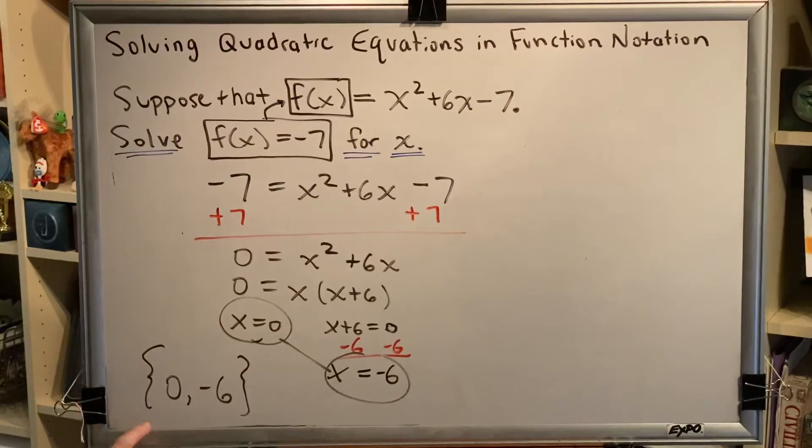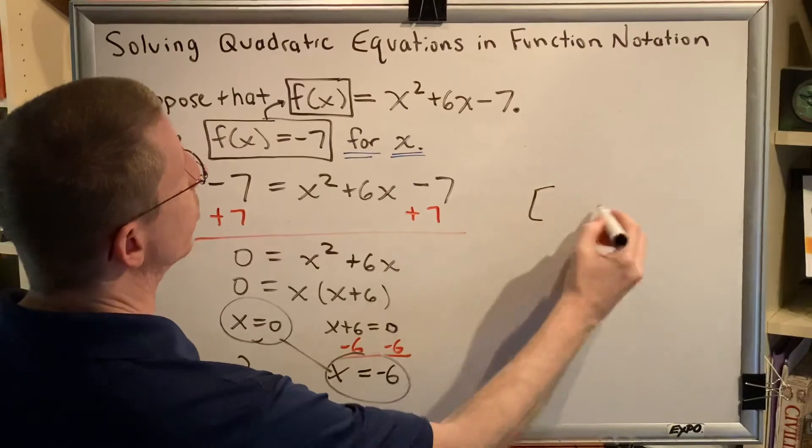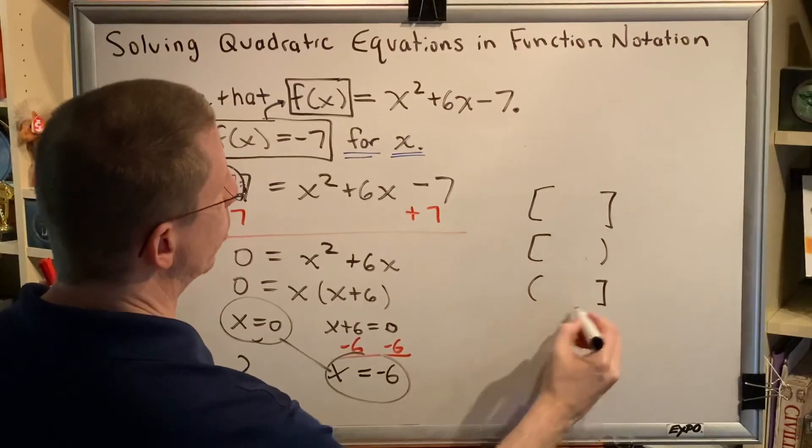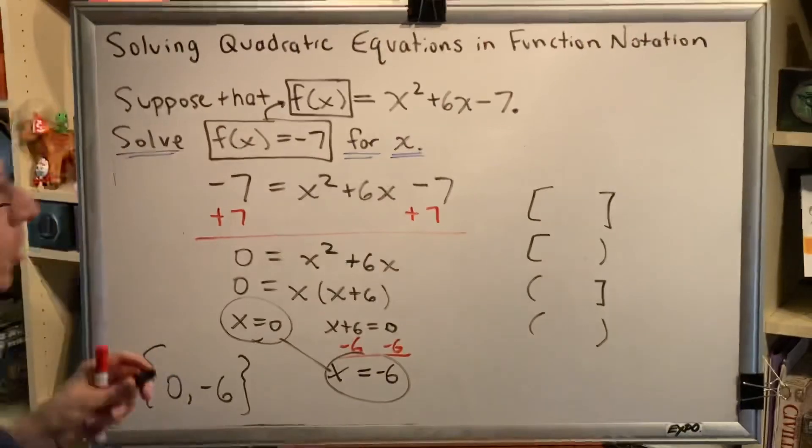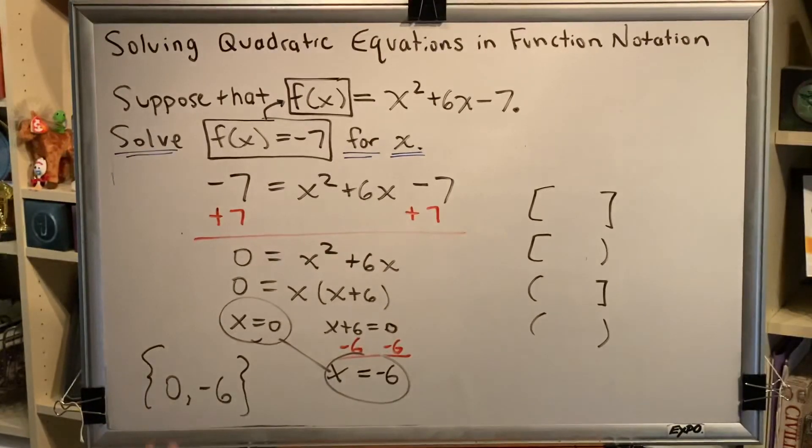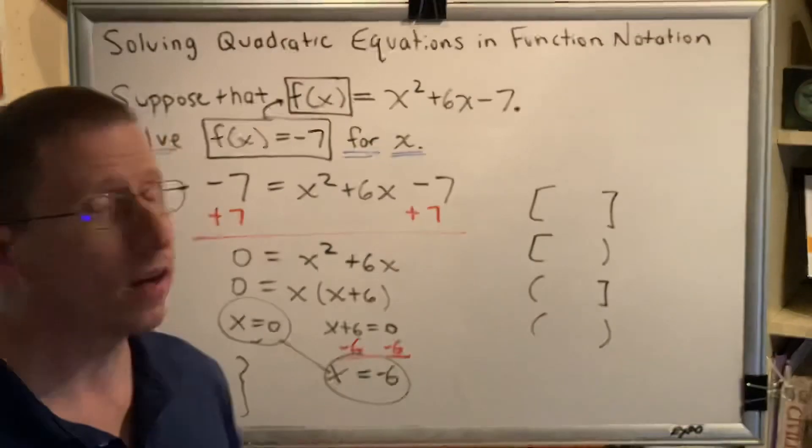Braces are used to indicate that there are a countable number of answers. There are two answers, 1, 2. And that's why we use braces. When there are not a countable number of answers, for example, an infinite number of answers, that is when brackets and parentheses are used to create an interval. But in this problem, we have braces for our answer because there are countably many answers. There are two answers, 0 and negative 6.